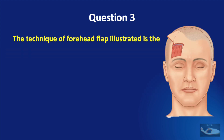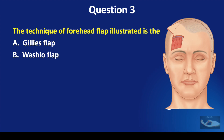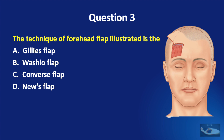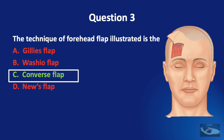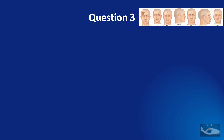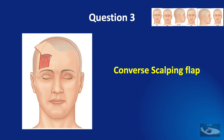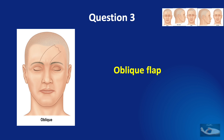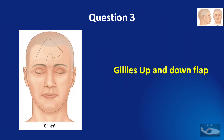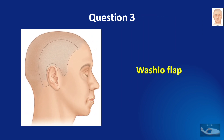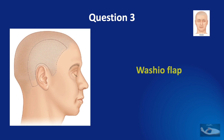Question 3. The technique of forehead flap illustrated is the Gillies flap, Washio flap, Converse flap, or News flap. The correct answer is the Converse flap. There are many forehead flap designs for facial reconstruction: the Converse scalping flap for nasal defects, the oblique forehead flap, the median forehead flap (sometimes called the Bishop Mitre flap), the News sickle flap, the Gillies up and down flap, the Washio flap based from the post-auricular region with pedicle on forehead skin, and the horizontal forehead flap.